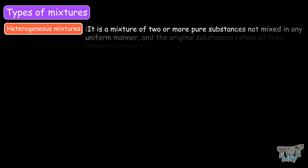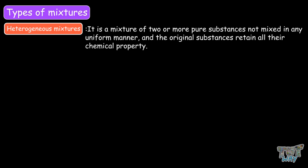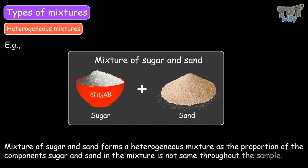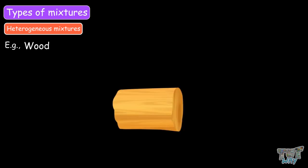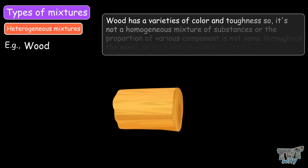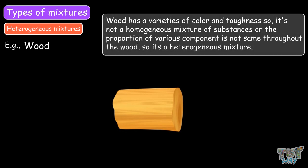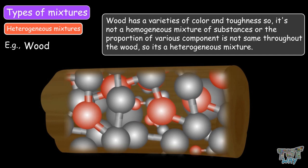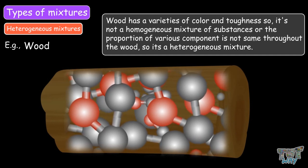Now let's learn what is a heterogeneous mixture. It is a mixture of two or more pure substances not mixed in a uniform manner, and the original substances retain all their chemical properties. For example, a mixture of sugar and sand forms a heterogeneous mixture, as the proportion of the components of sugar and sand in the mixture is not the same throughout the sample. Wood has varieties of color and toughness, so it is not a homogeneous mixture — the proportion of various components is not the same throughout the wood. So wood is also an example of a heterogeneous mixture.